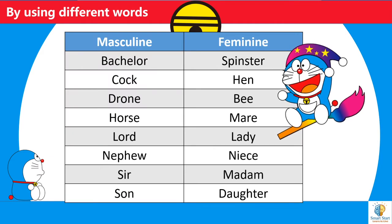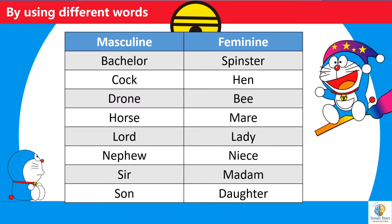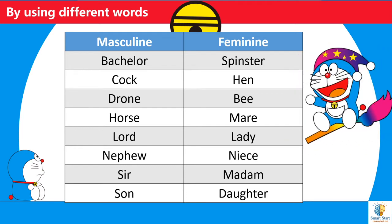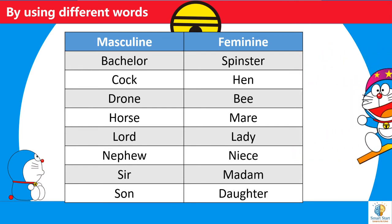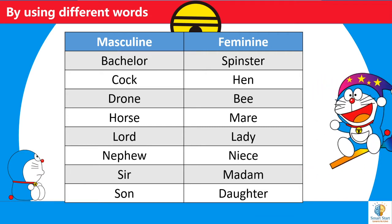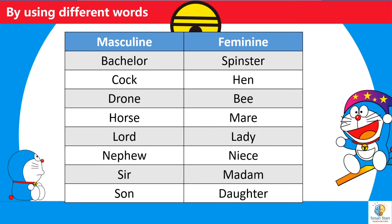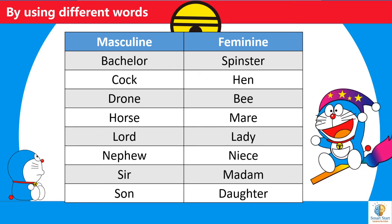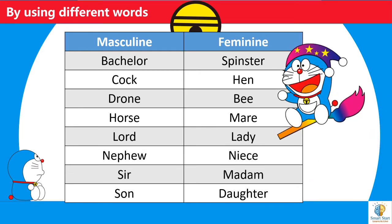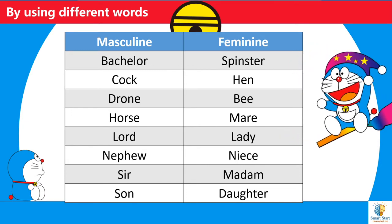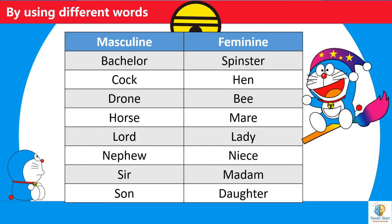Now we will see examples of masculine and feminine gender formed by using different words. Bachelor/spinster, cock/hen, drone/bee, horse/mare, lord/lady, nephew/niece, sir/madam, son/daughter.